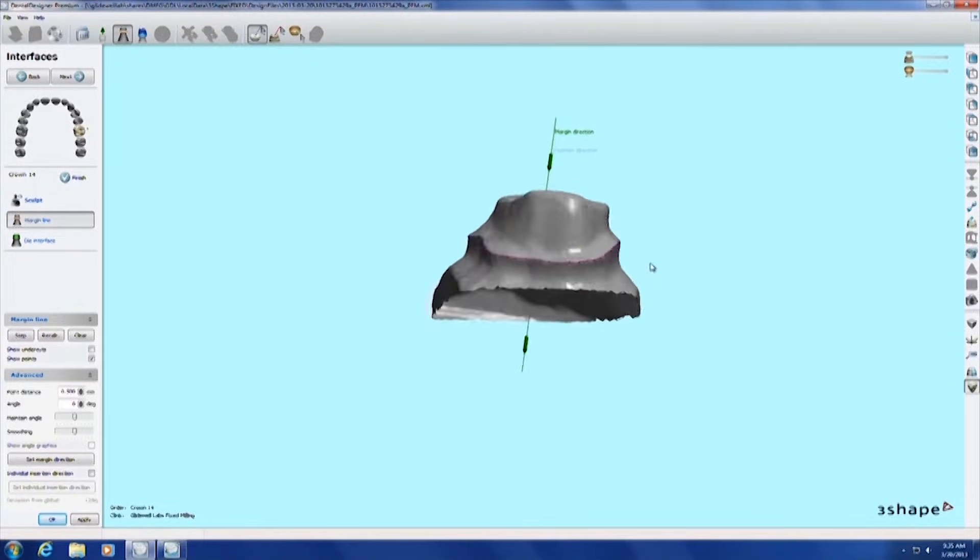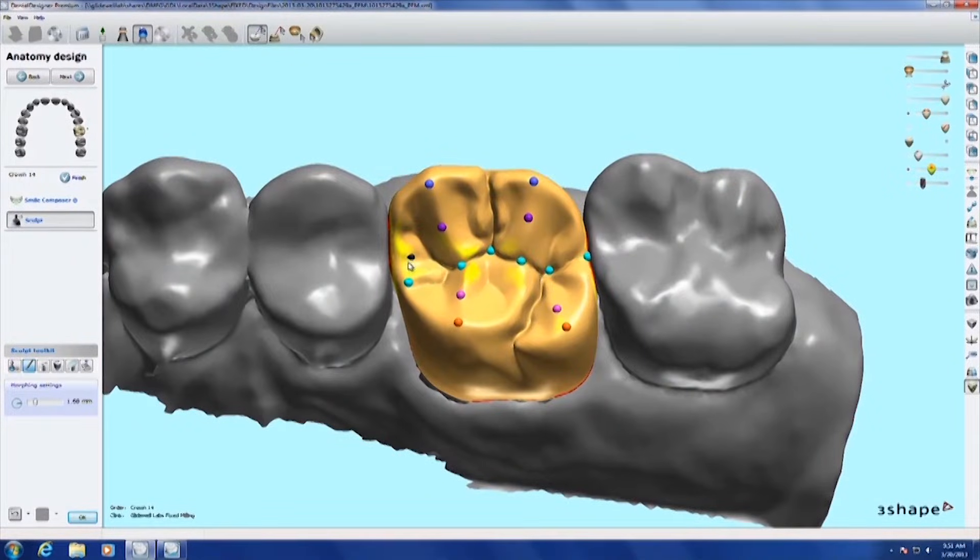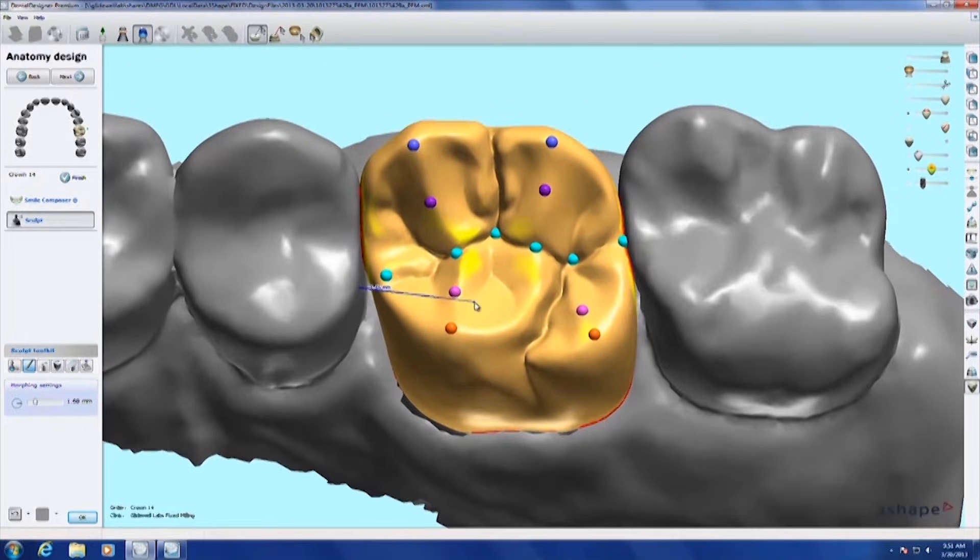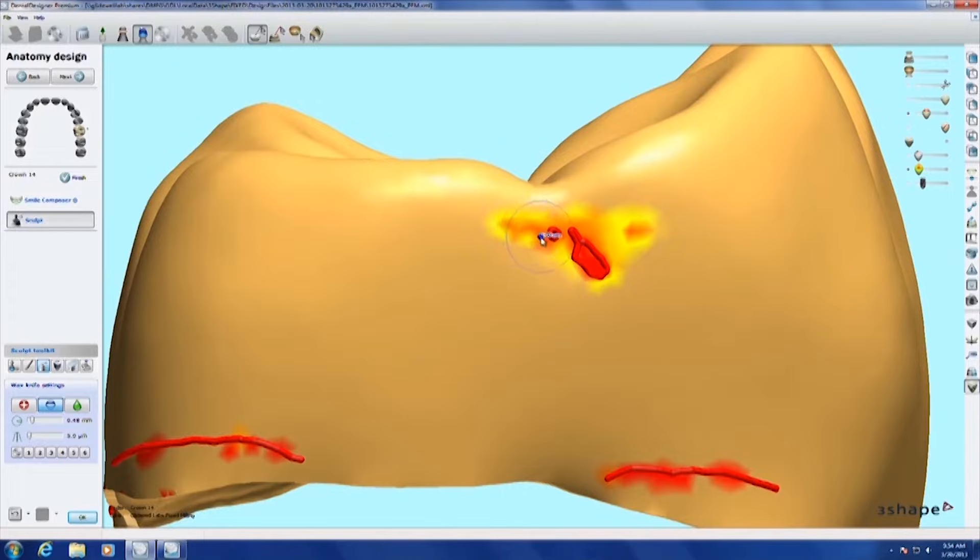We're going to mark the margin here and move it around and try to be true to it. As long as the dentist has left us enough room, which this dentist really did, you can see we've got an ideal anatomical pattern that it's going to propose for that particular crown.